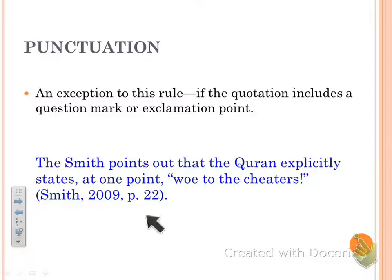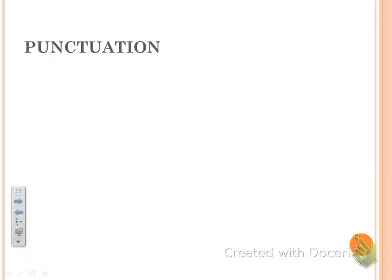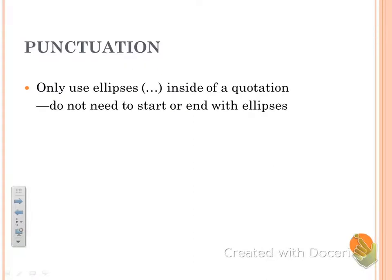You never have two periods in the same sentence. Some of you smart alecs are probably thinking, well, what about ellipses? Those are a bunch of periods. No, they're not — they're ellipses. Ellipses are just made up of three dots.